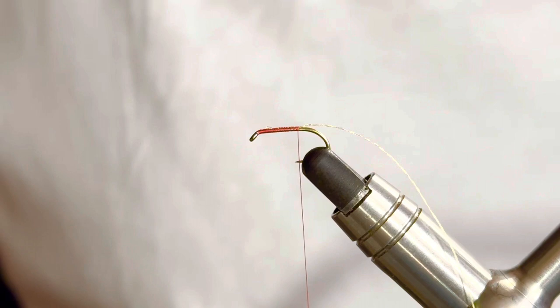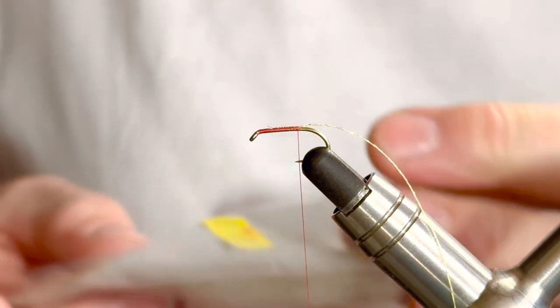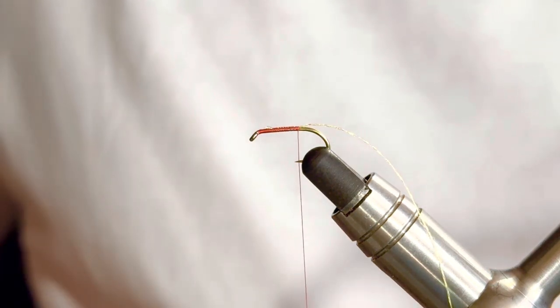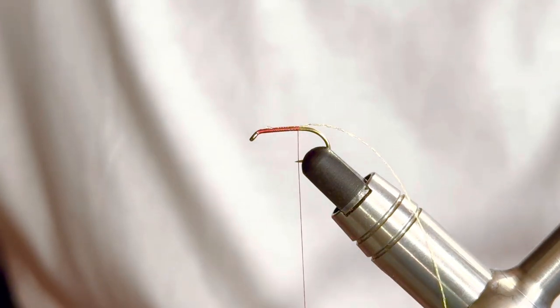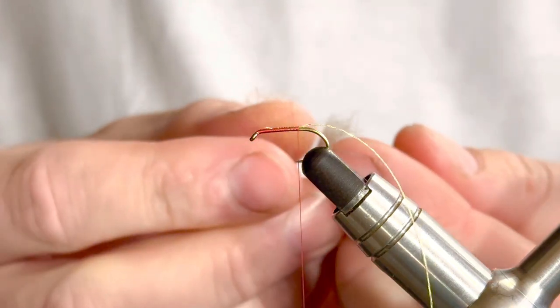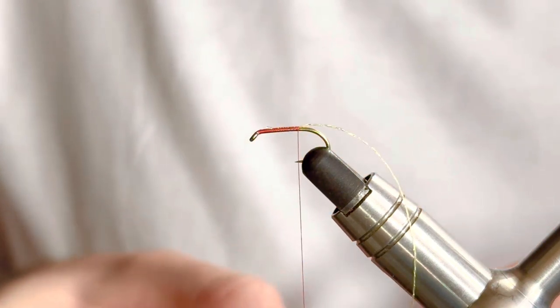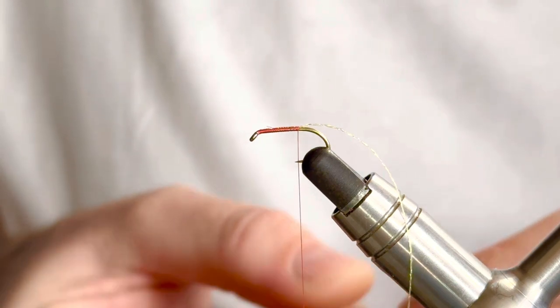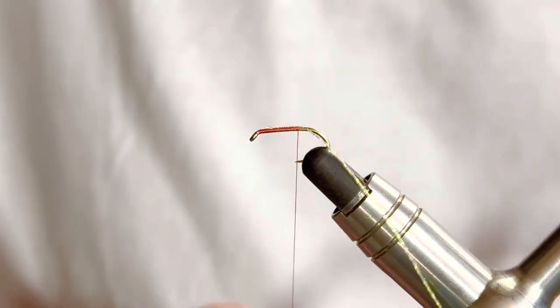At this stage we're going to add our dubbing body. Like I say, it is a natural hare's ear blend that I've got, but I like to just add a little bit of brown hare's ear dubbing just to darken it up a little bit. All I do is take the two blends and just pass them between alternating just to kind of mix it up a little bit. It just gives that fly a little bit of a darker appearance.